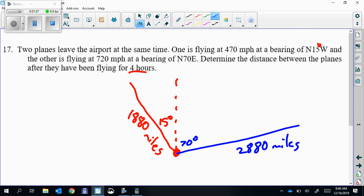Determine the distance between the planes after they've been flying for four hours. So this makes a triangle. There, triangle. This angle here would be 70 plus 15, which is 85 degrees. And we know the two sides on either side of that angle.